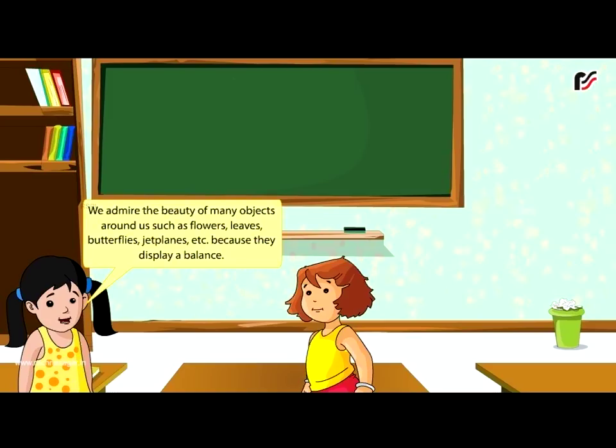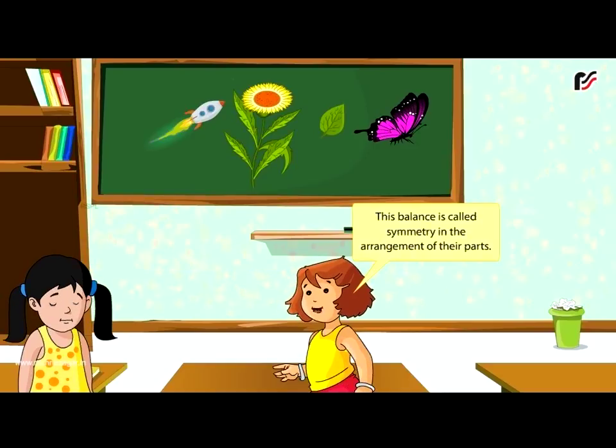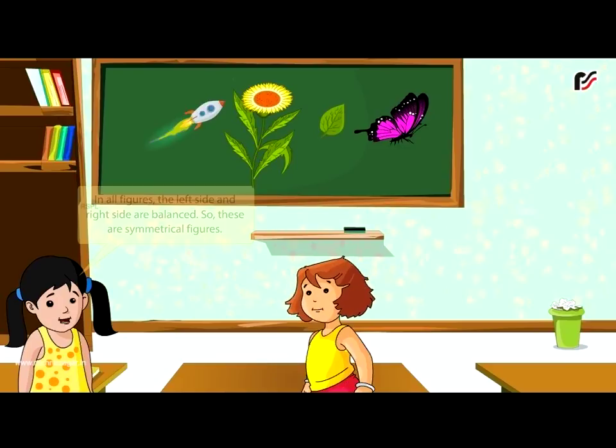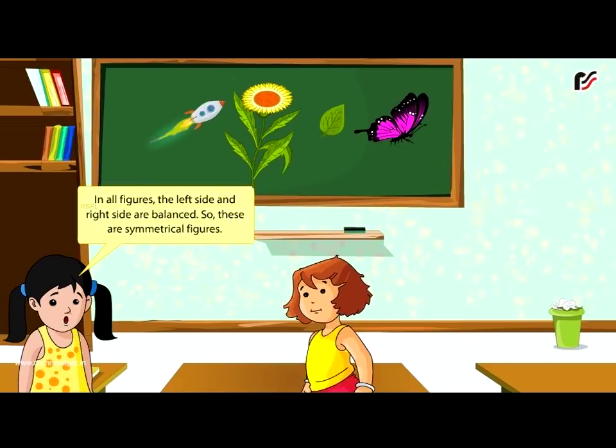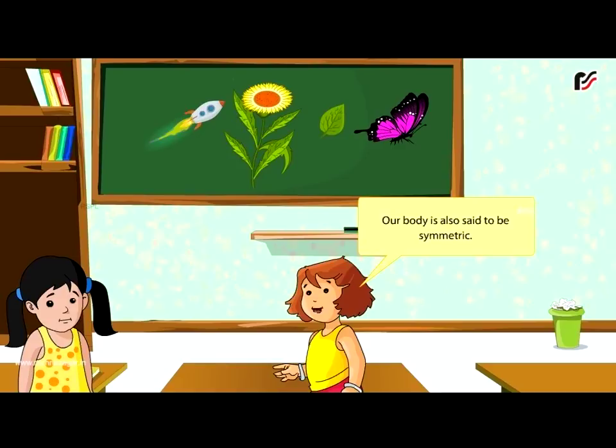Symmetry: We admire the beauty of many objects around us such as flowers, leaves, butterflies, jet planes, etc., because they display a balance. This balance is called symmetry in the arrangement of their parts. In all figures, the left side and right side are balanced. So, these are symmetrical figures. Our body is also said to be symmetric.